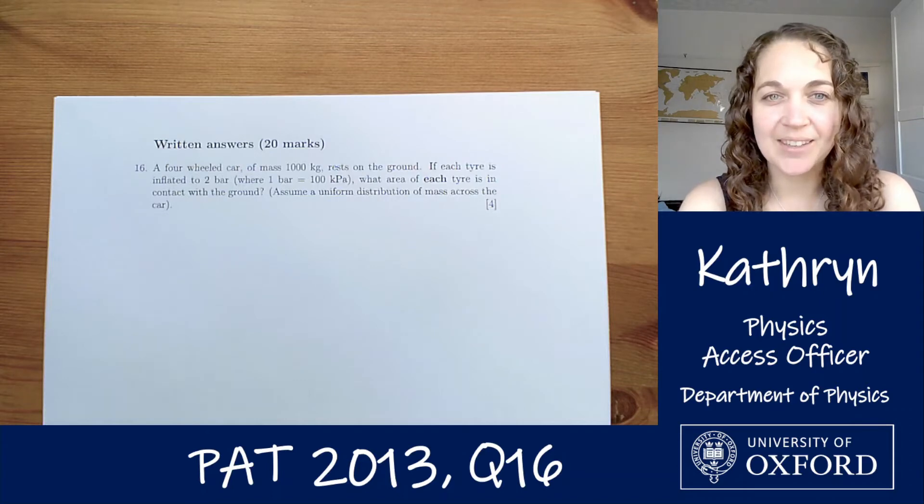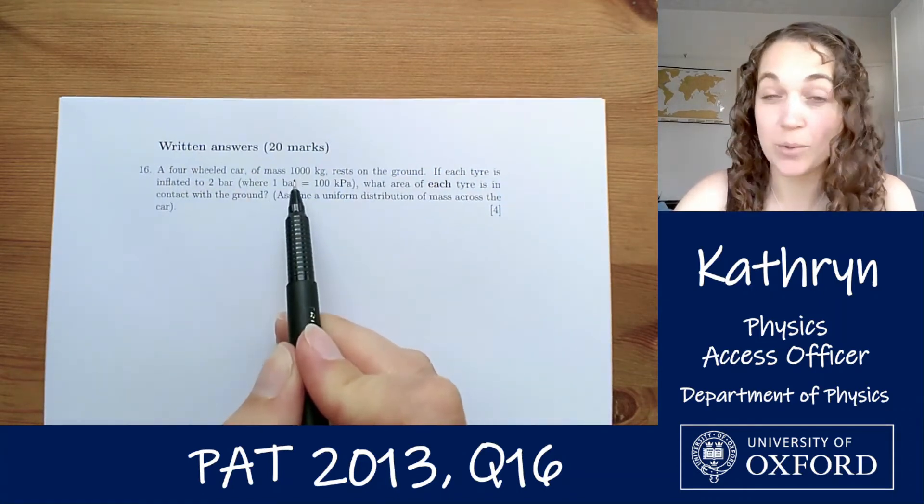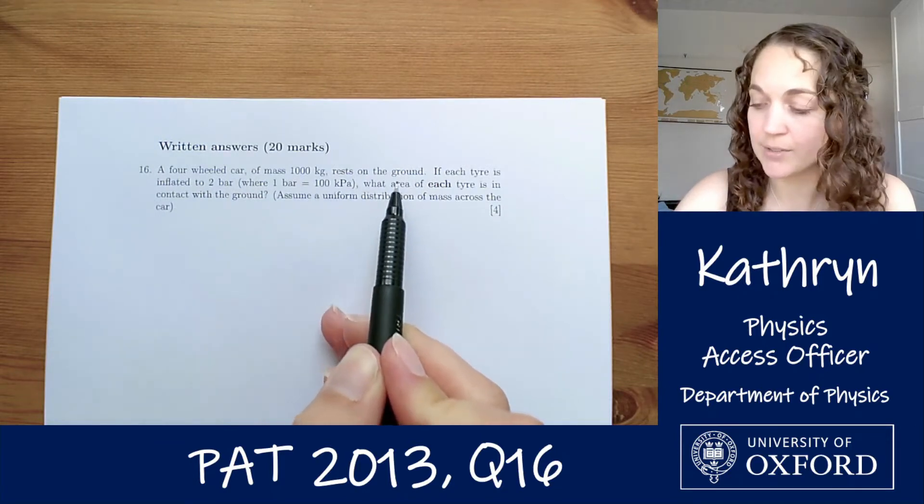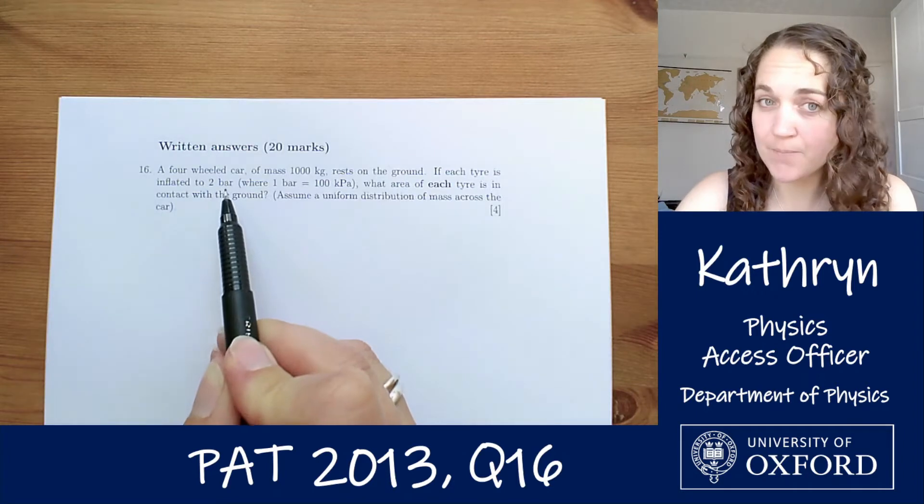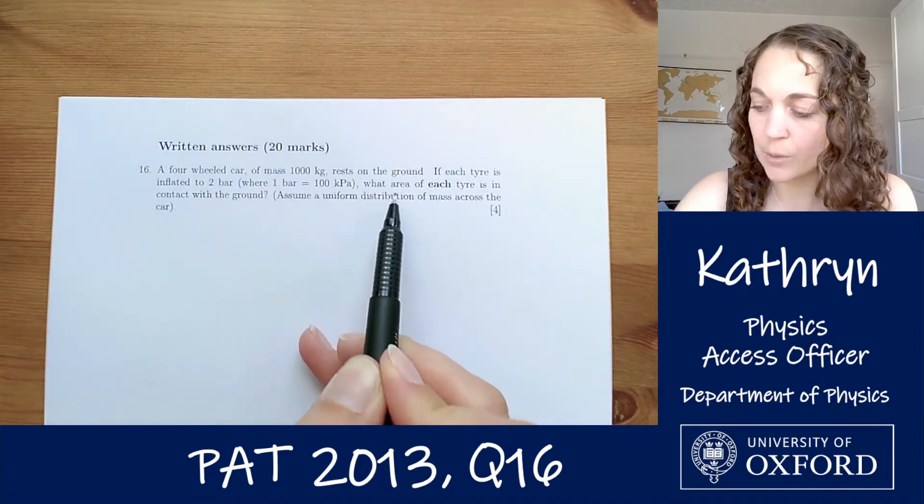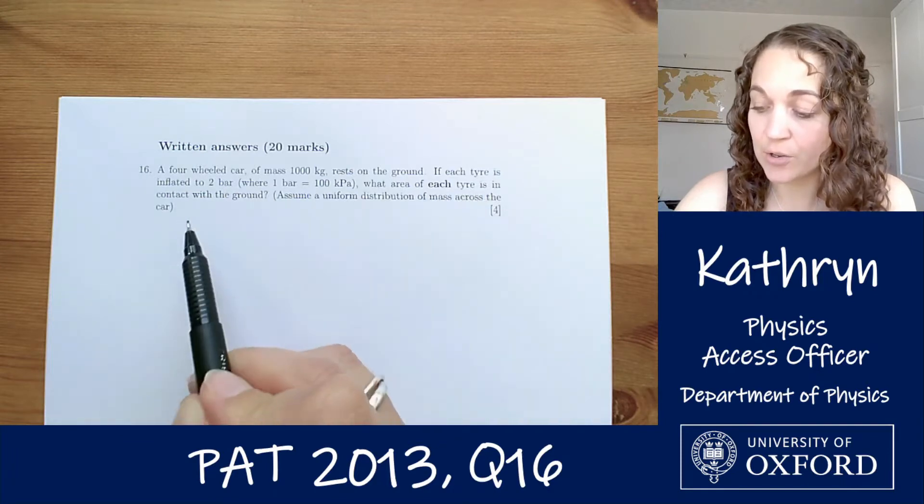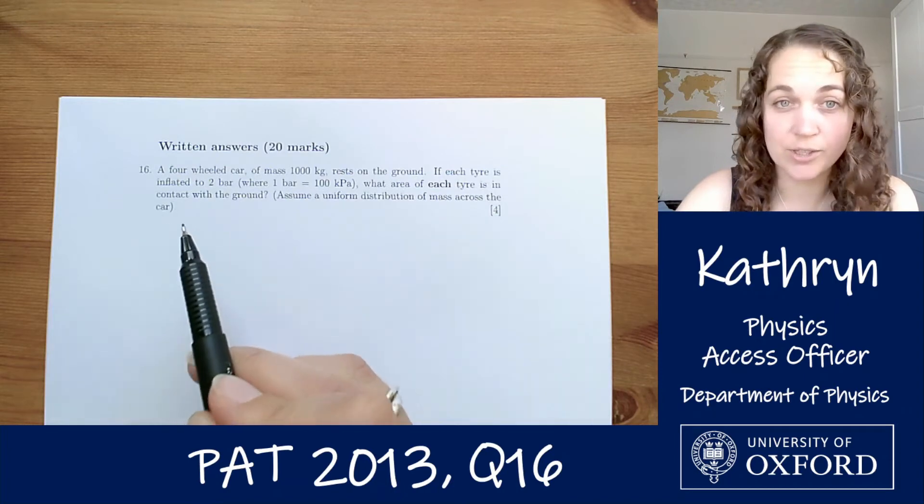That question is like this. A four-wheeled car of mass 1000 kilograms rests on the ground. If each tyre is inflated to two bar, where one bar equals 100 kilopascals, what area of each tyre is in contact with the ground? Assume a uniform distribution of mass across the car.